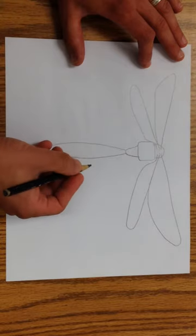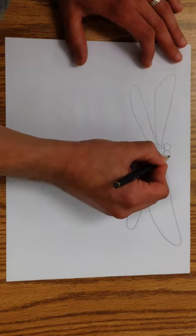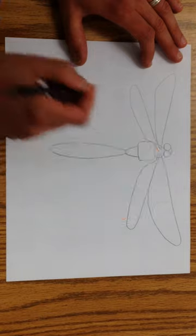Now we want to add some eyes, two circles here and here, and then we connect the top.